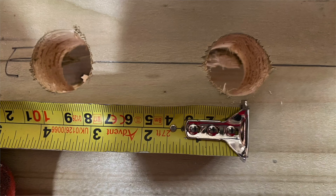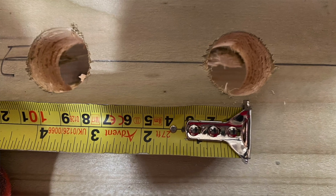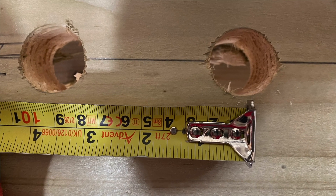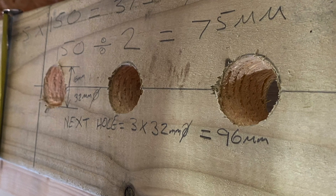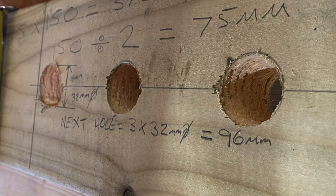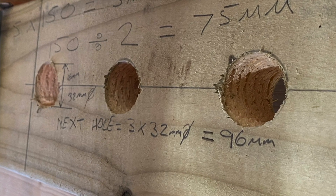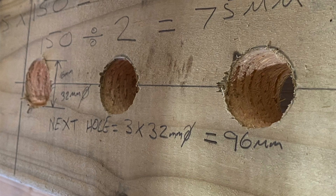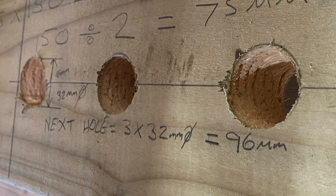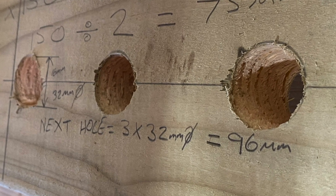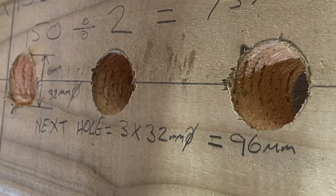C: not less than 3 diameters centre to centre apart, and not from the edge or circumference of the first hole. Sticking with the example of the 32mm spade bit, 3 times 32mm means we would have to measure 96mm from the centre of our first hole to give us the centre for our next permitted hole.